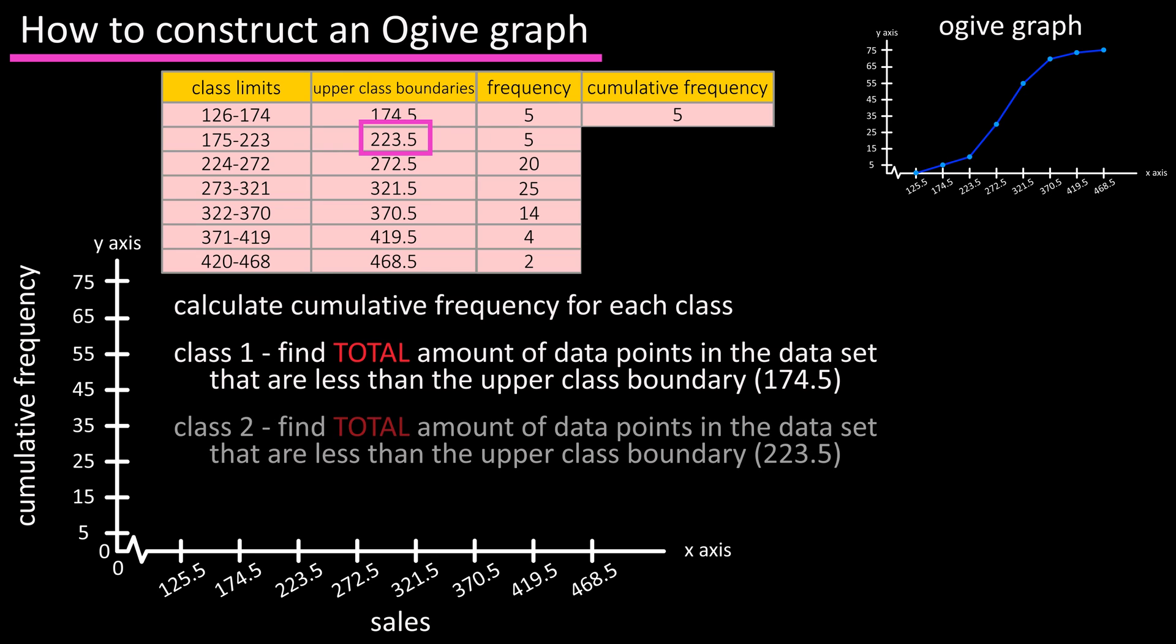For the second class we have an upper class boundary of 223.5, and we can see from the table that there are a total of 10 values in the data set that are less than this, five in class one and five in class two.